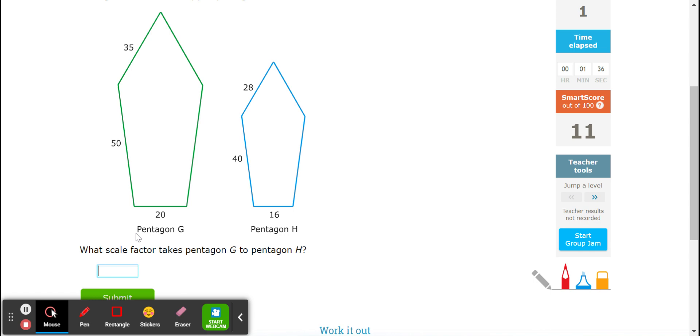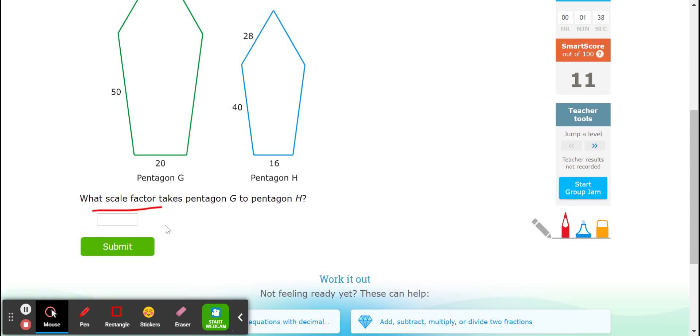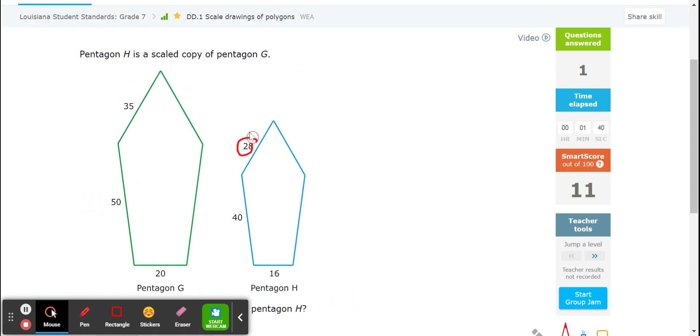Let's keep going. Again, what is the scale factor? So pick two sides. Doesn't matter which one. The 28 goes on top, because this is the new image. He's the copy of the green. He is the old. So it's always new over the old.